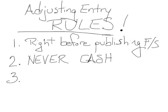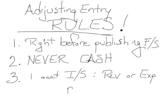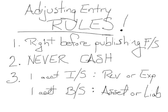The third and last rule is more of a hint than anything. One account will be an income statement account — so essentially, you will use a revenue or an expense. And the other one will be a balance sheet account that you adjust in the same adjusting entry. So one account is a balance sheet account — an asset or a liability. For example, you could debit an expense and credit a liability, or you could credit a revenue and debit an asset.